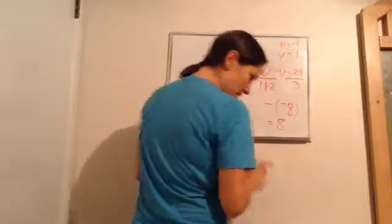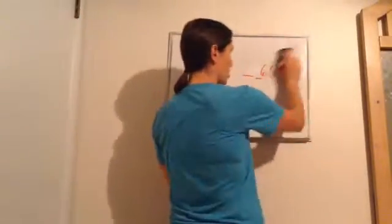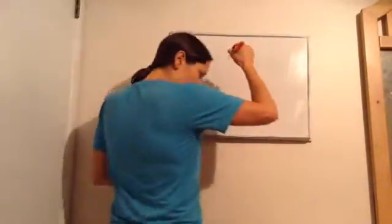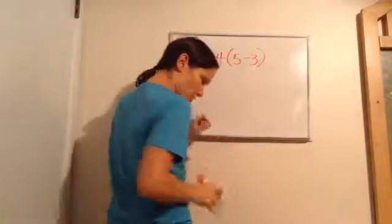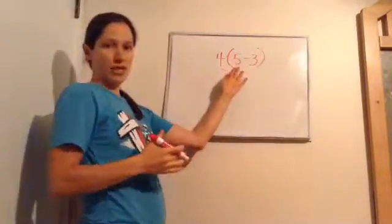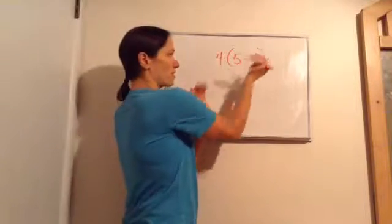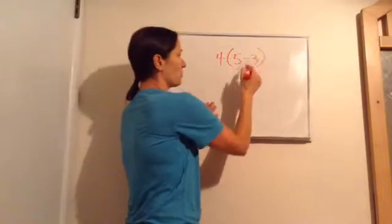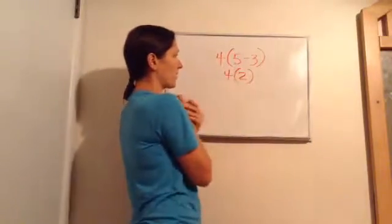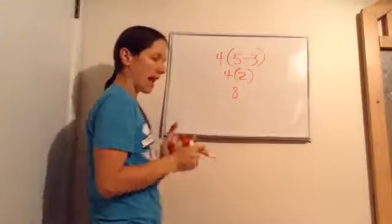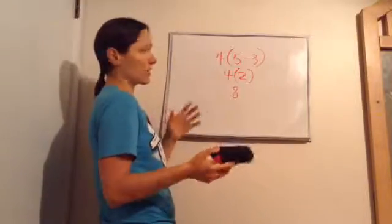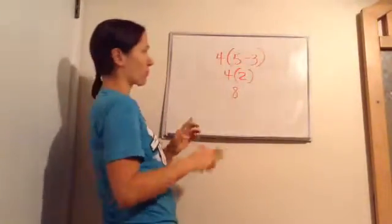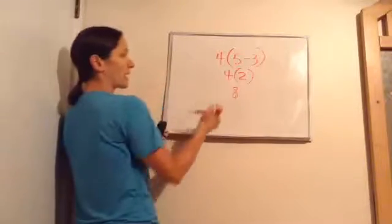Now let's move to doing the distributive property. We'll talk more about terms in the next lesson. Normally, when you see a problem like this, you would do parentheses first — 5 minus 3 is 2 — then 4 times 2 is 8. That is the right answer. But I want to teach you a different method called the distributive property.